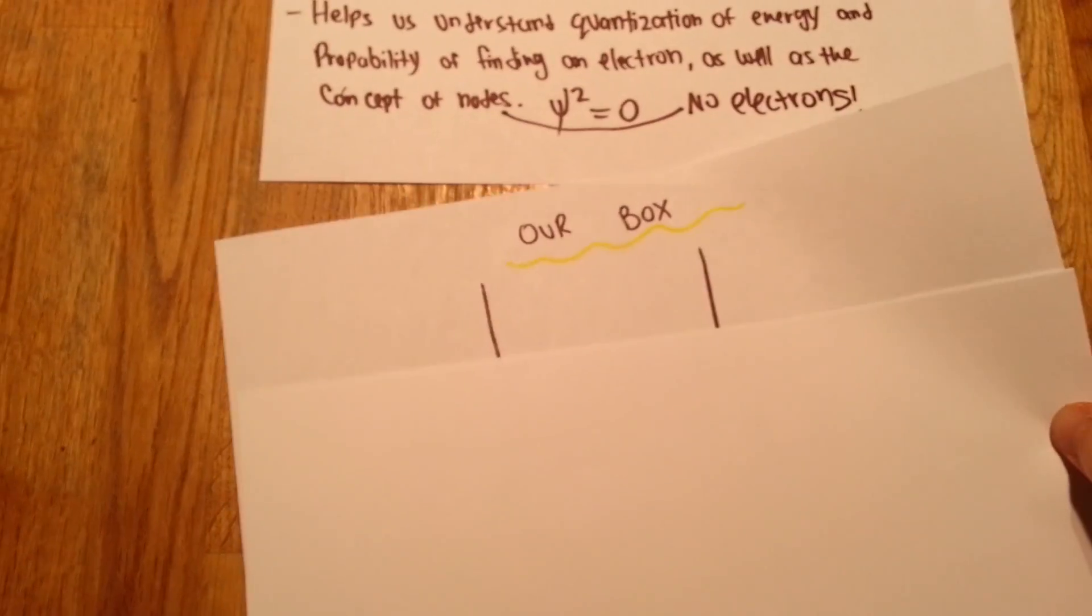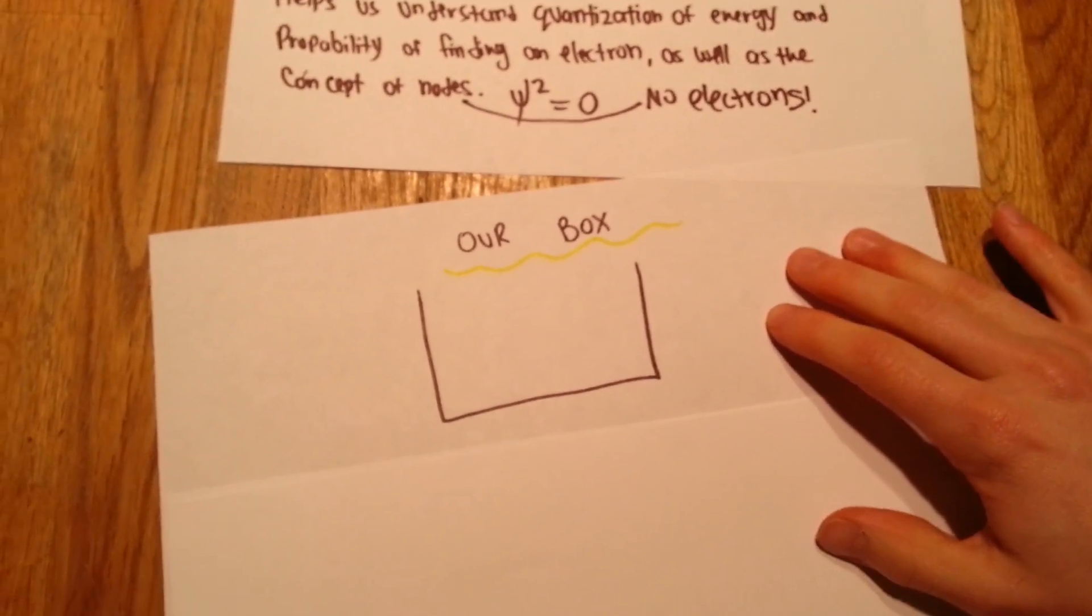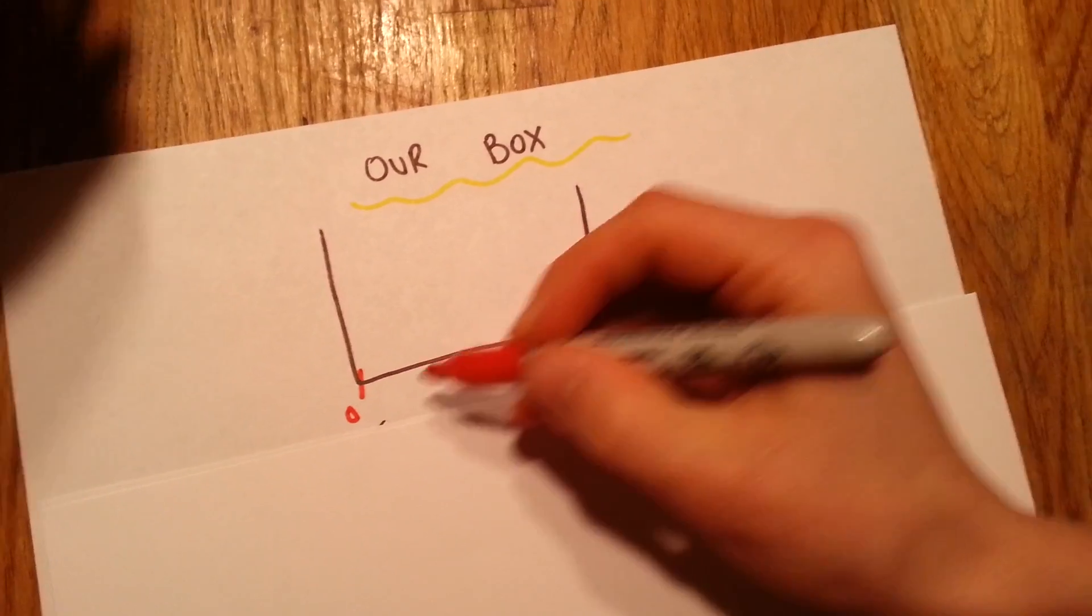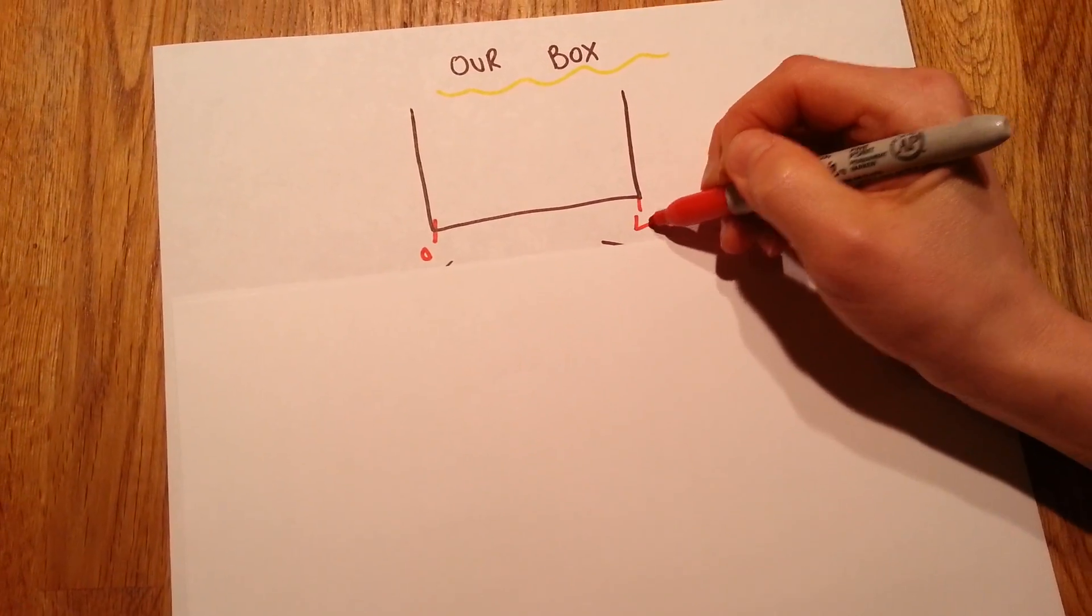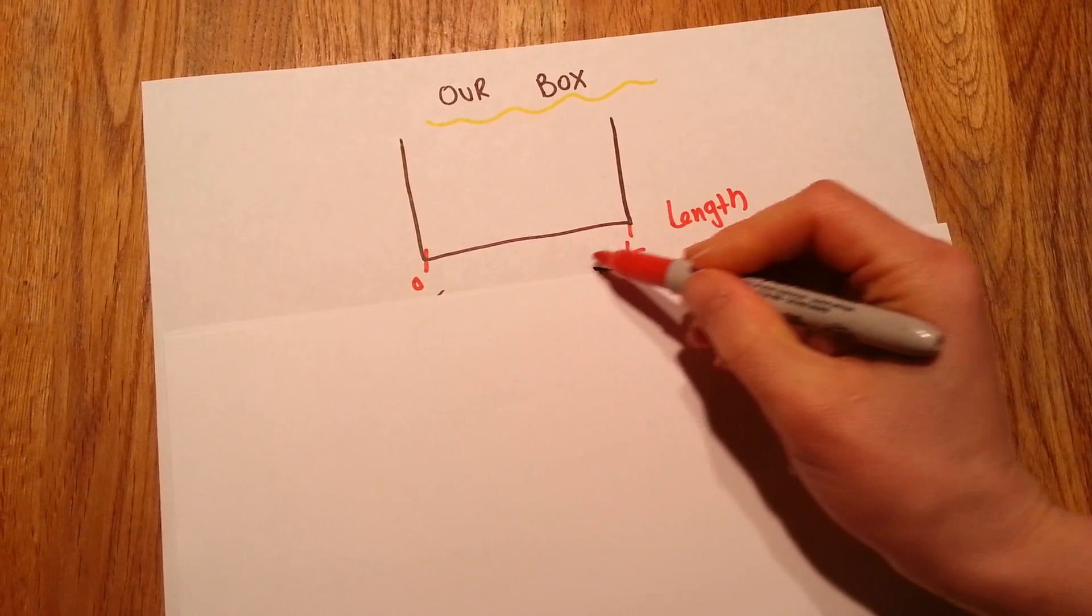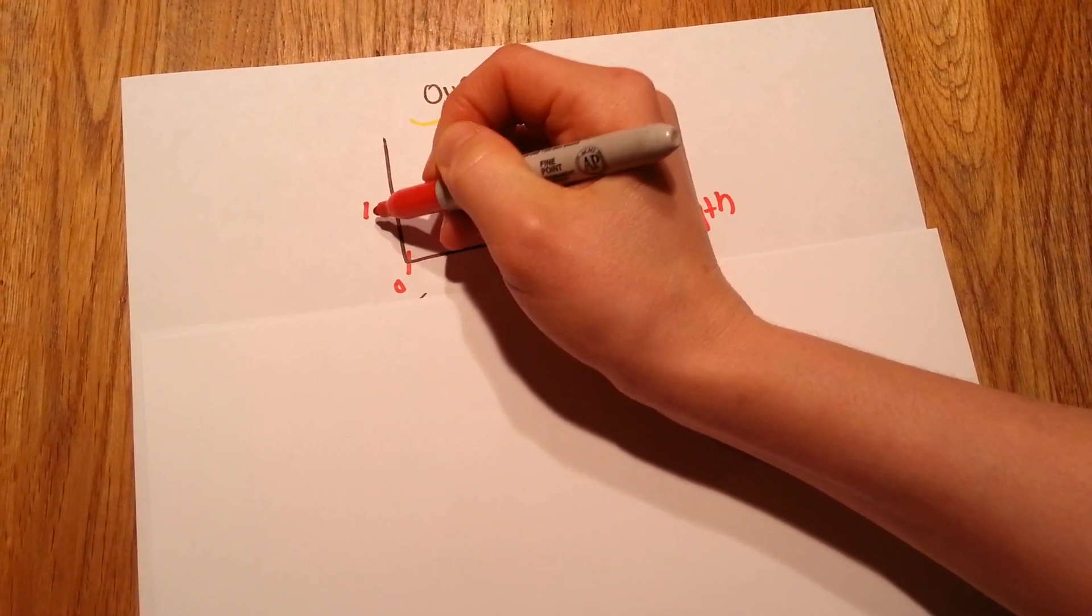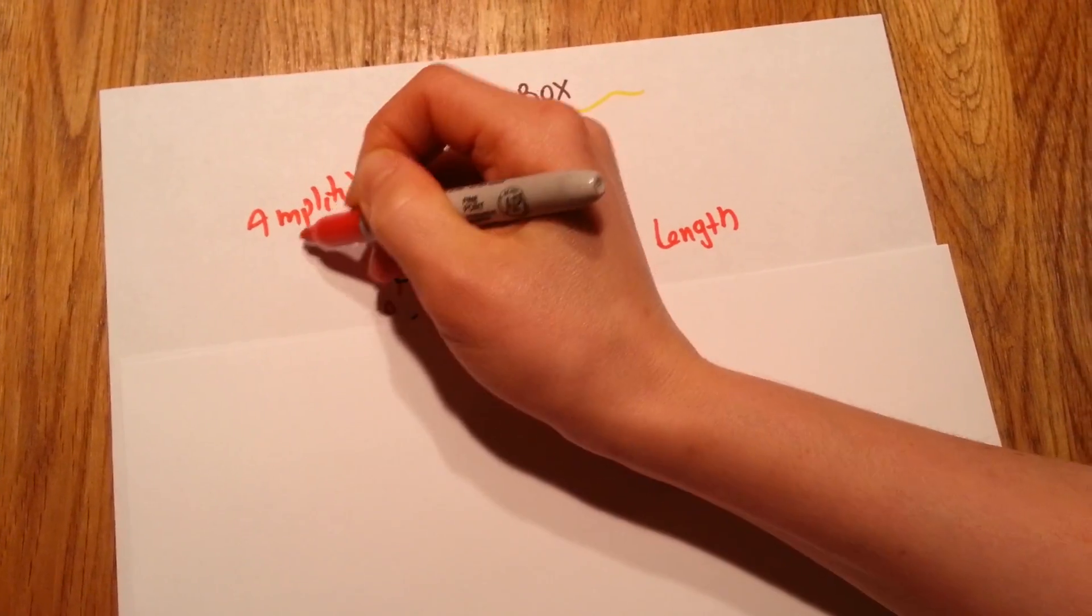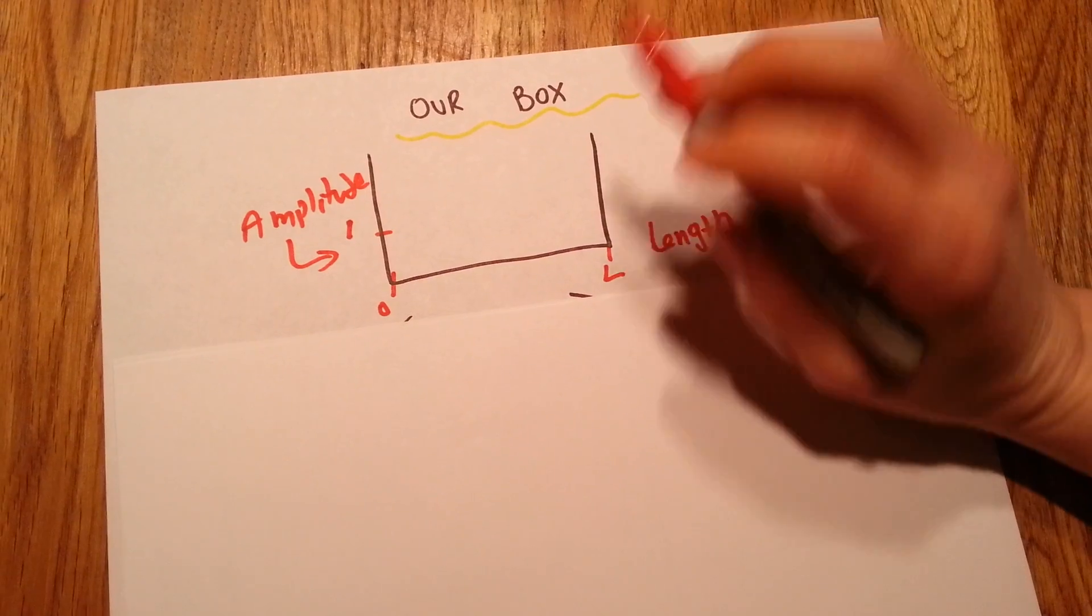So moving on to familiarizing ourselves with the actual box. What is the box? This is the box. Zero is where the box starts. And L is the length of the box. This is the maximum length. And in here we're going to have amplitude. You don't need to worry about the amplitude at all to solve these kind of problems.